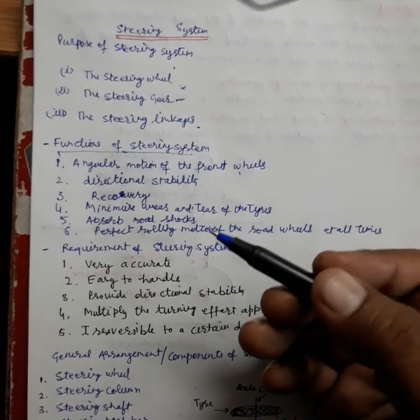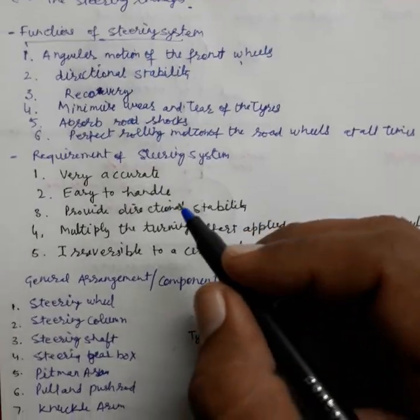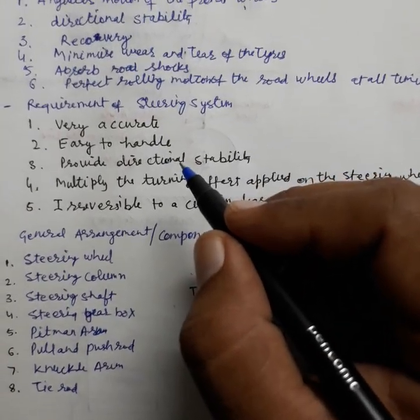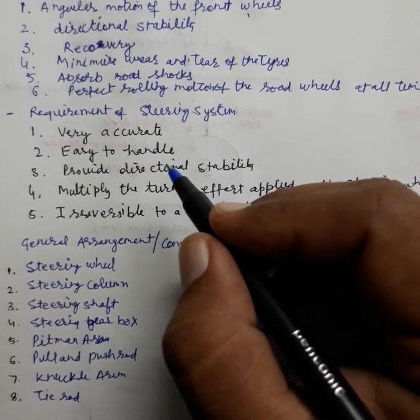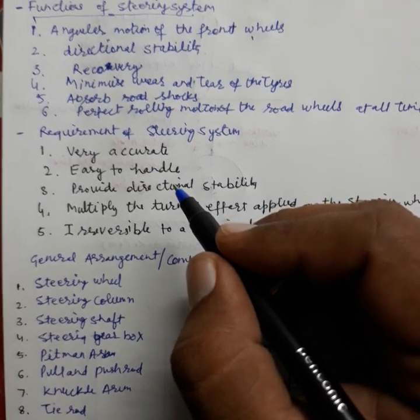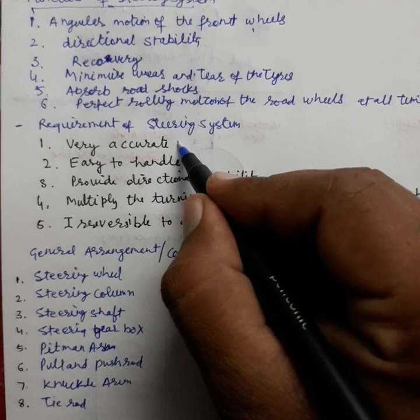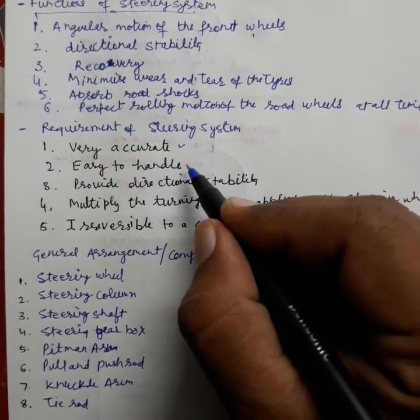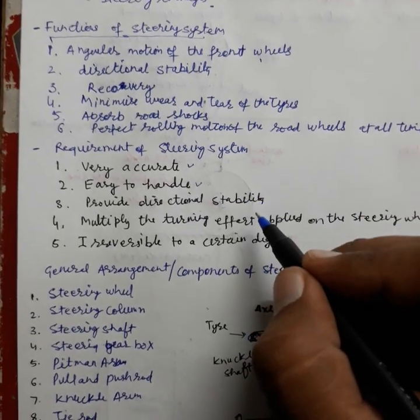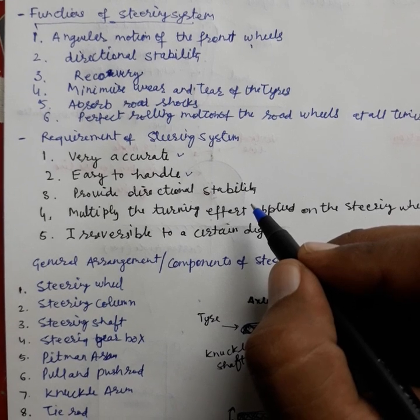Then after functions of steering system we will come to the next topic, requirement of steering system. The requirements of steering systems are: it should be very accurate, it should be easy to handle, and provide directional stability.